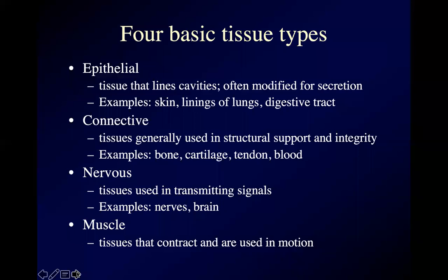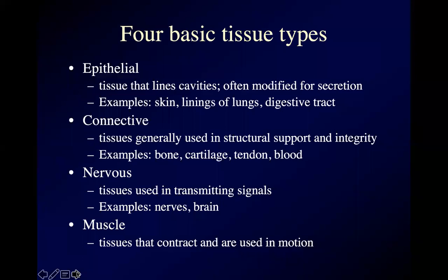Epithelial tissue is tissue that lines something. The inside of your mouth is lined with epithelial tissue. The inside of your nose is lined with epithelial tissue. The inside of all of your digestive system, mouth to anus, the inside of whatever reproductive system you happen to have, the inside of your bladder and your lungs — all of those are made of epithelial tissue. Your skin, which is the lining of all of you, is epithelial tissue.